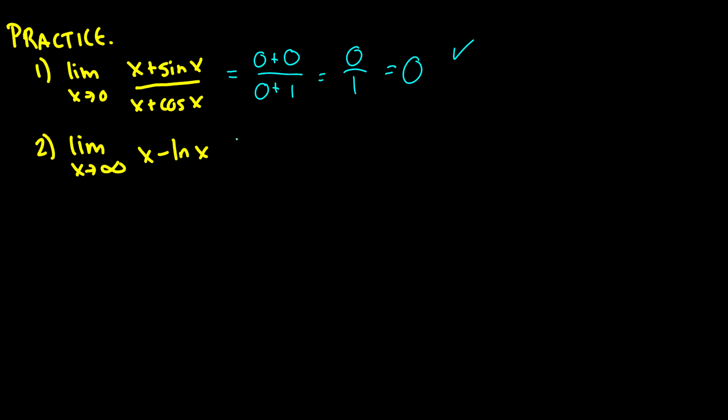Question two is also tricky because you have infinity minus infinity, which means you still cannot do L'Hospital's rule because you need something over something else. You had to factor out an x. So you have x(1 - ln x/x).